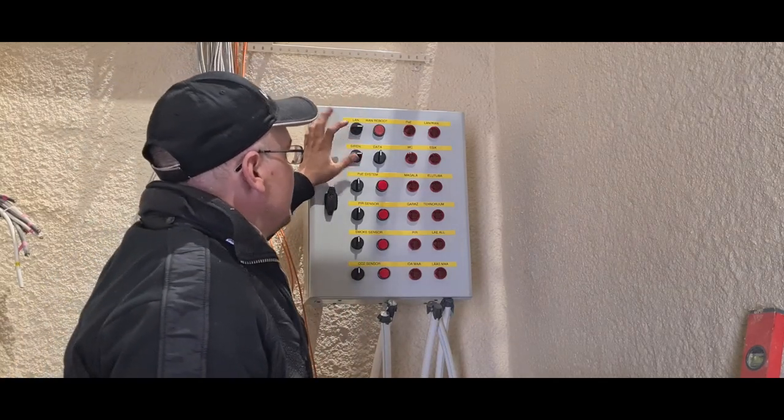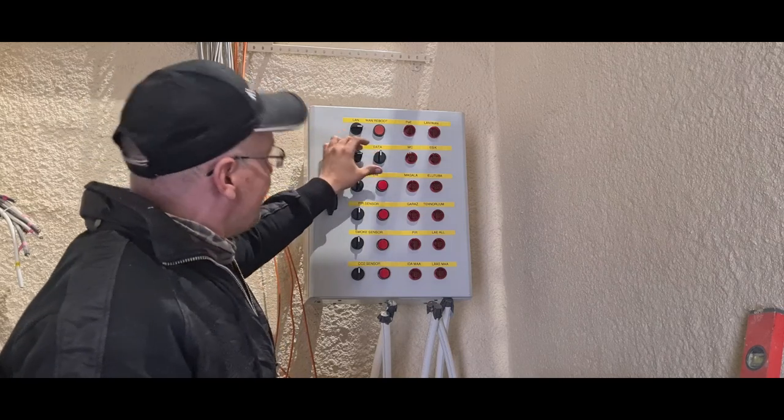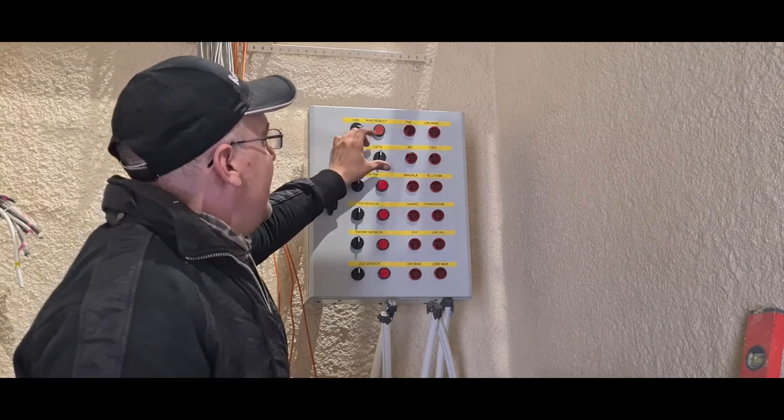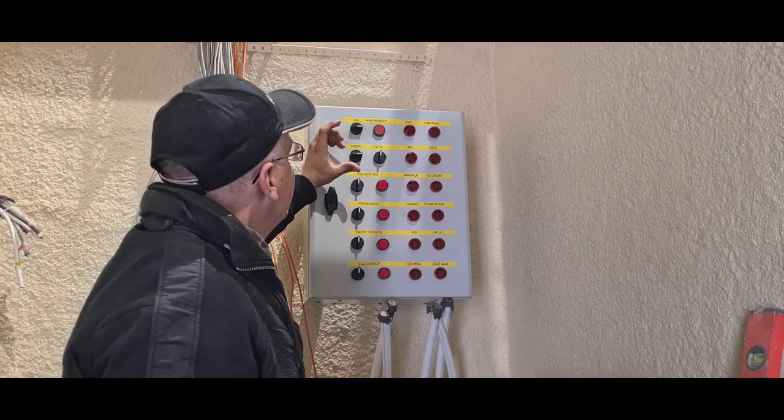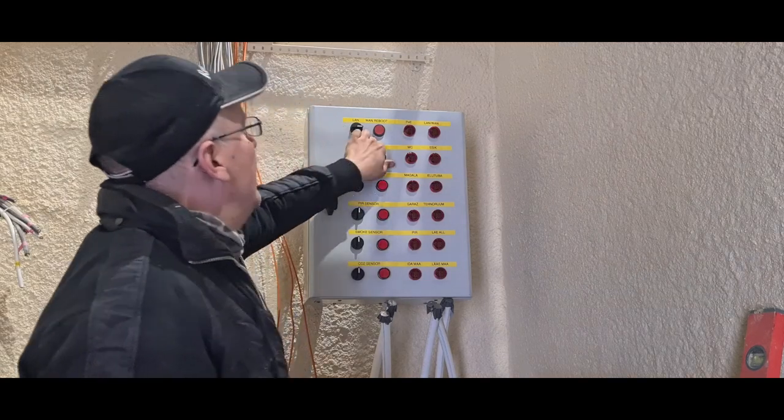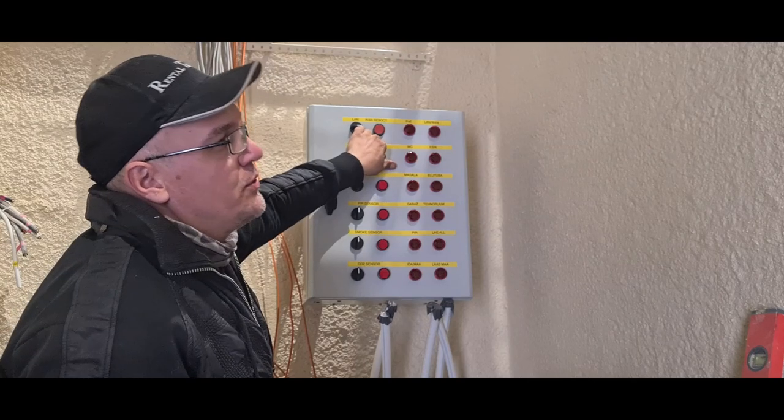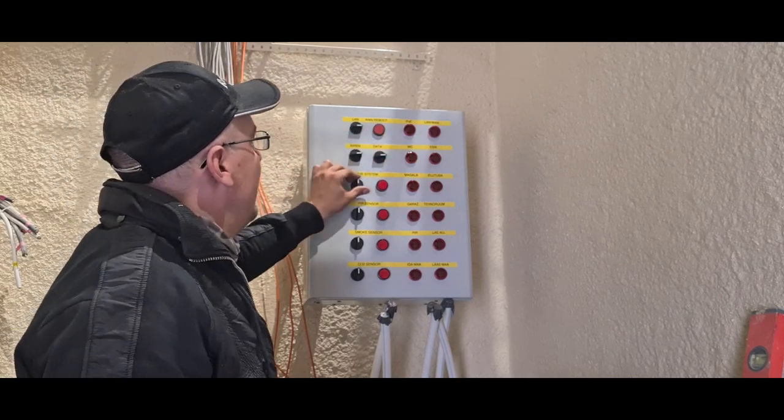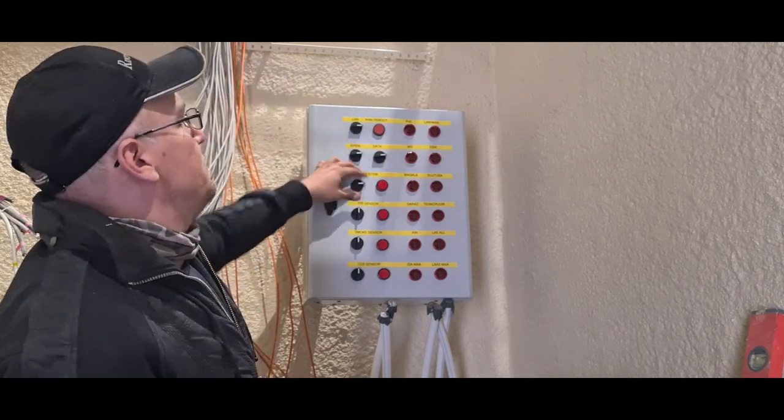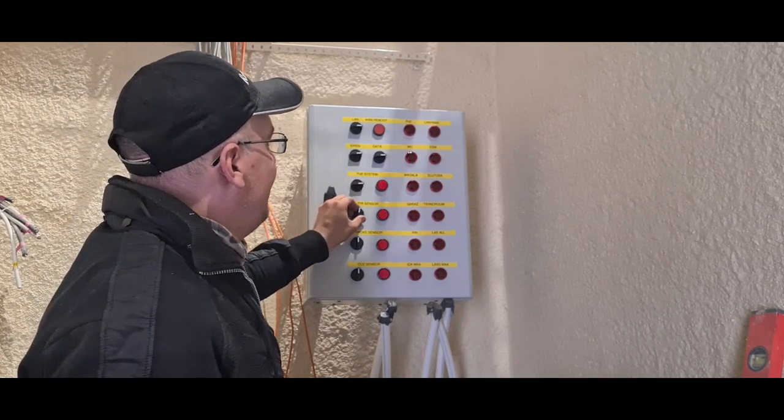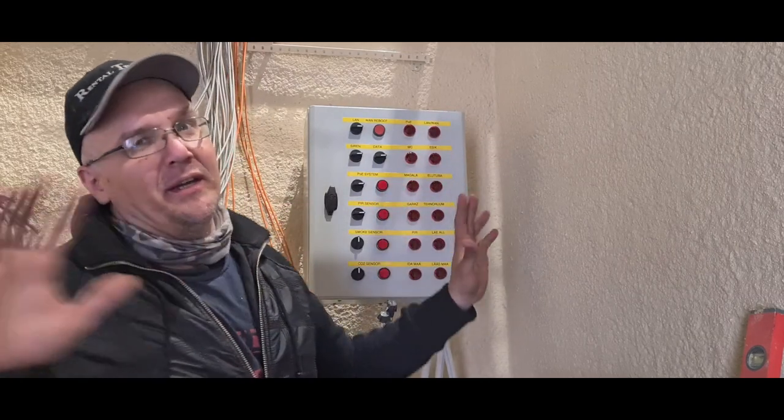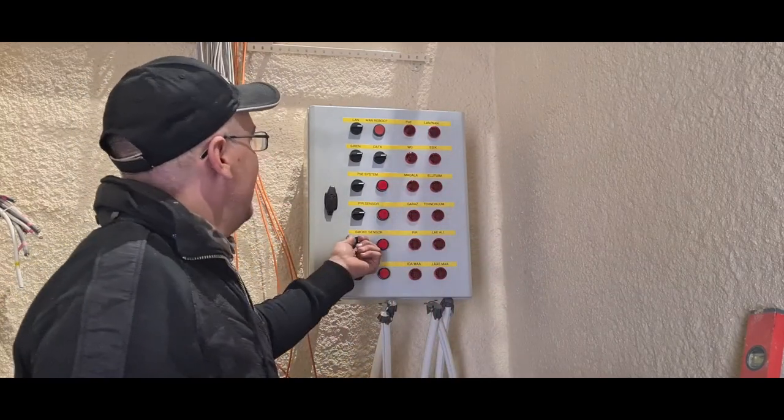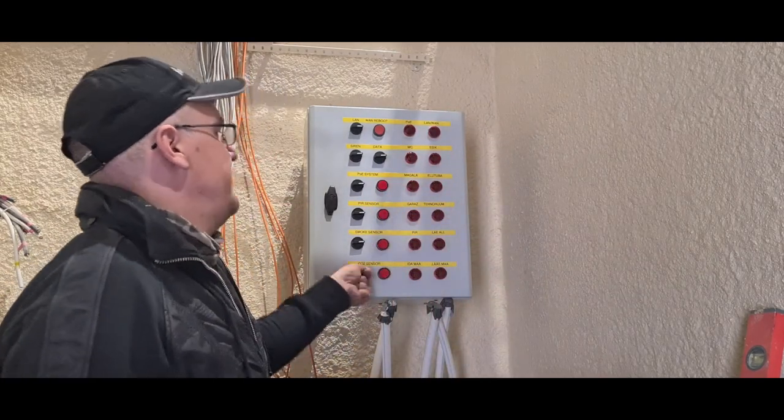This is for siren on and off. This is for backup storage, power over ethernet system, PIR sensors—those are for if some movement is detected on the property—smoke sensors, and CO2 sensors.